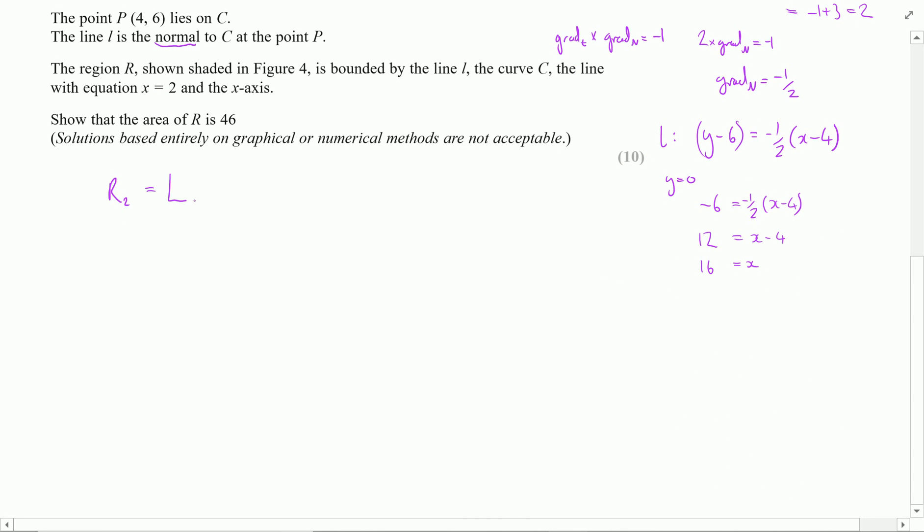So let's be clear about how we're working this out. Region 2, which is this triangle, has a base of 12 and a height of 6. To find the area of a triangle, we're doing a half of the base times the height, which is 6 times 6, which is 36.